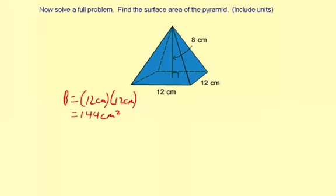Now to find the area of each lateral face we're given the height of the pyramid but not the lateral height or the slant height. So we need to figure that out using a right triangle.